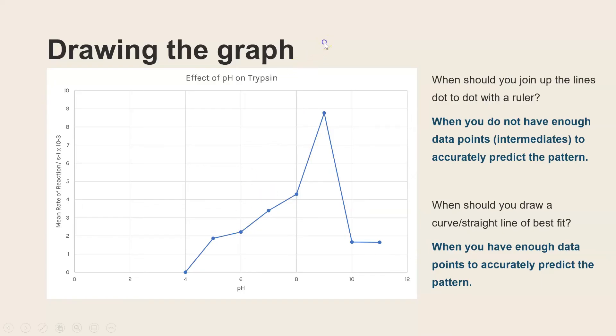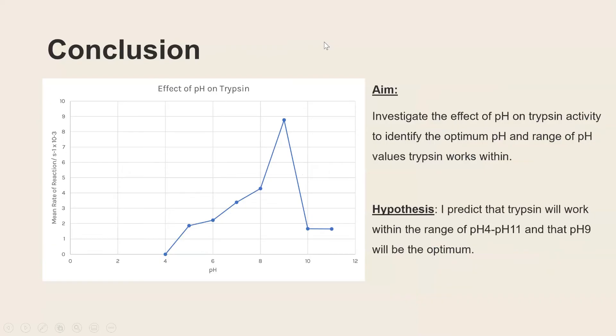The final two things would be the conclusion and evaluation and to come up with your conclusion always refer back to your aim and your hypothesis. And we said our aim was to investigate the effect of pH on trypsin to identify the optimum and the working range and we predicted the range would be 4 to 11 and the optimum would be 9. So that's what we predicted so when we conclude that is what we're using as our basis for the conclusion.